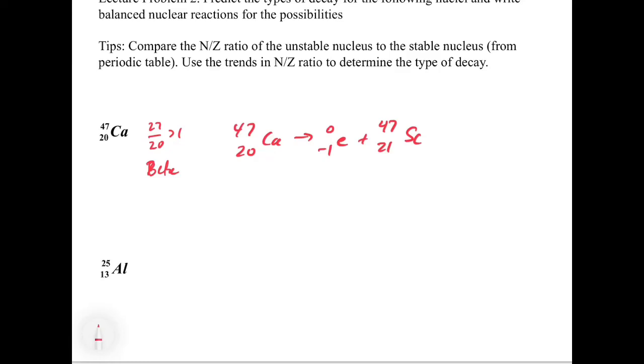Now let's look at the next one. We have 25 over 13. If we do our calculation here, we're going to get 12 for the n and 13 for the z. So this is going to be less than 1.